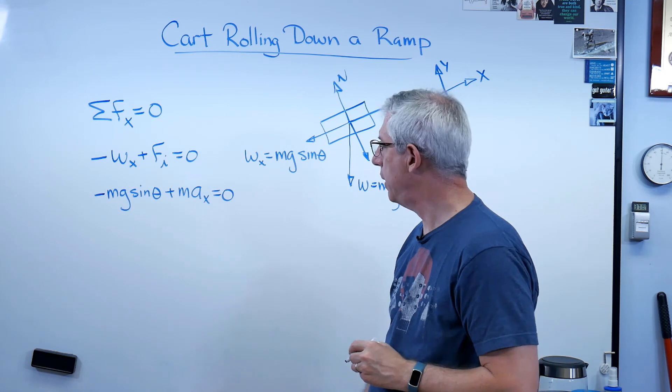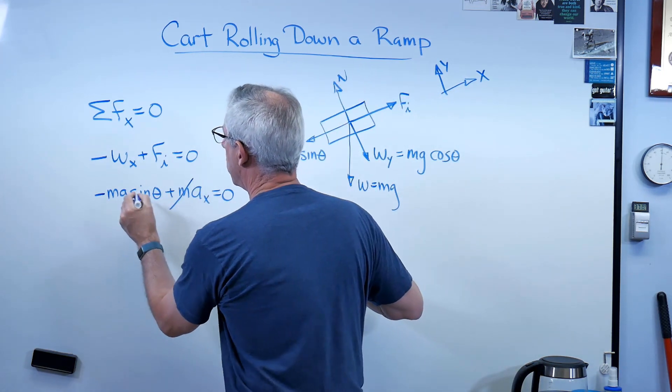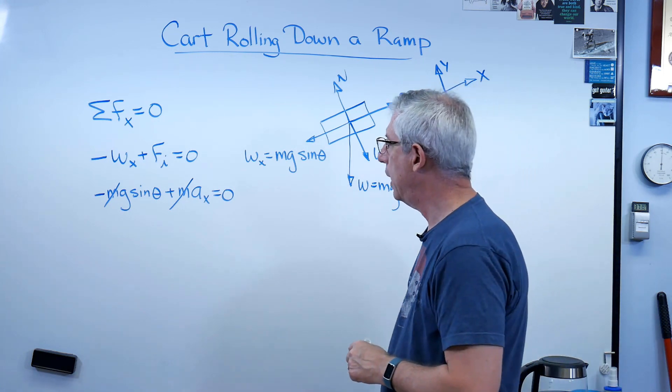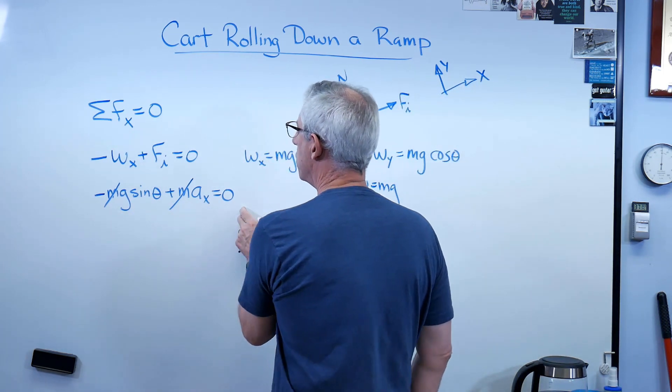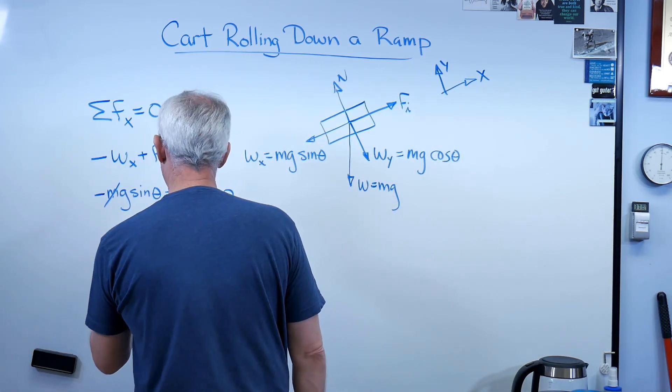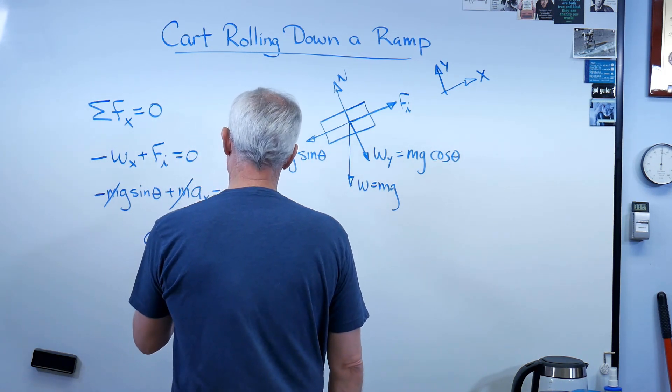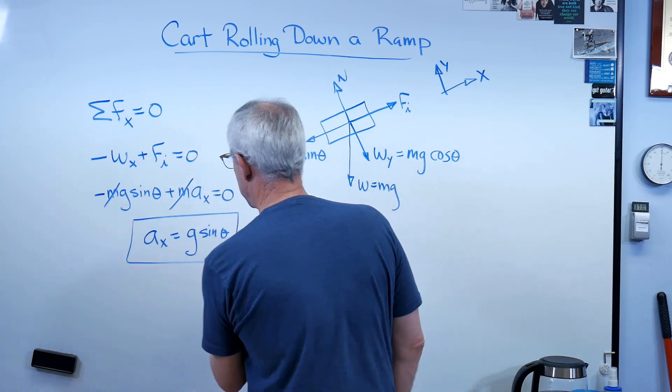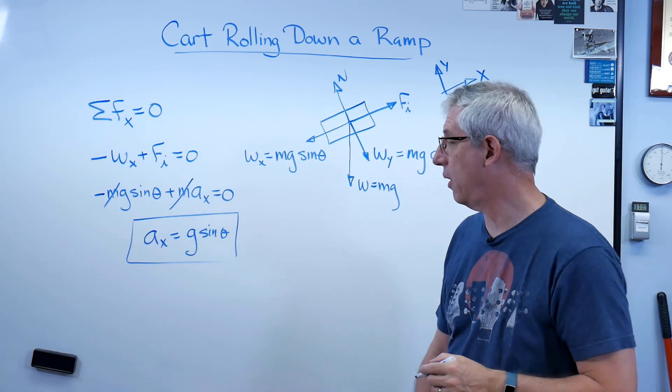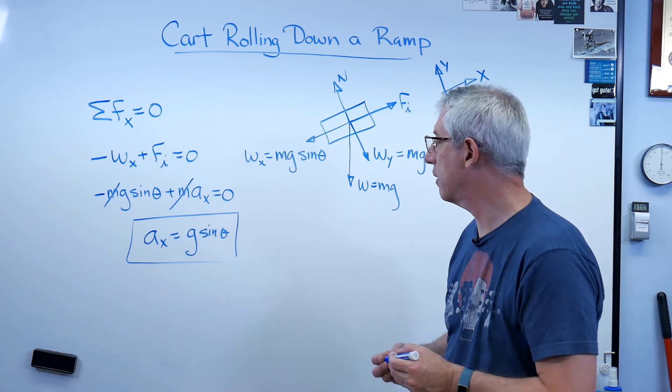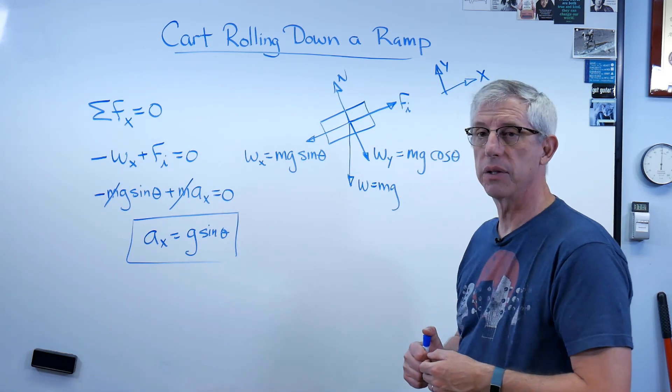Well, what about mass? It appears in both of these. I can divide through by mass. Zero over m is still zero. And let me push g over to the other side of the equal sign. And what I have is ax equals g sine theta. And that's it. That's all there is to this. It's one of those cases where you get a nicely simple answer here.